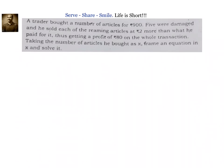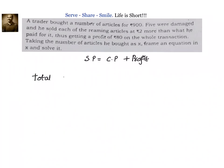We know the number of articles he sold is x minus 5. When we multiply SP per article by the number of articles sold, we get the total sale price. We also know that sale price equals cost price plus profit. So the concept we will be using to solve this problem is profit and loss: SP equals CP plus profit. The total CP of x articles is 900 rupees.